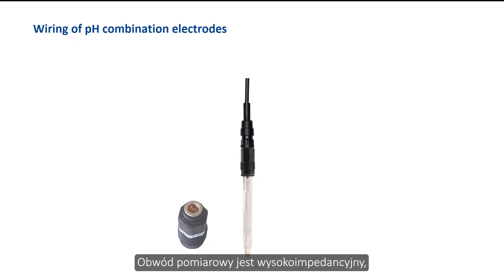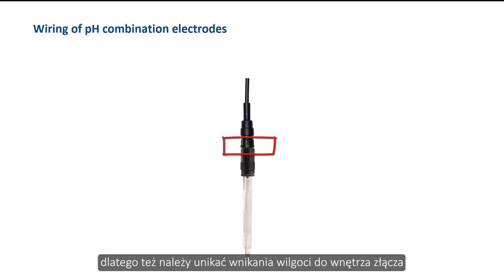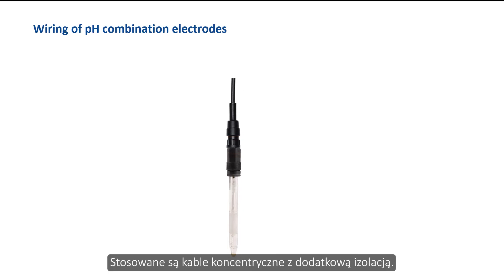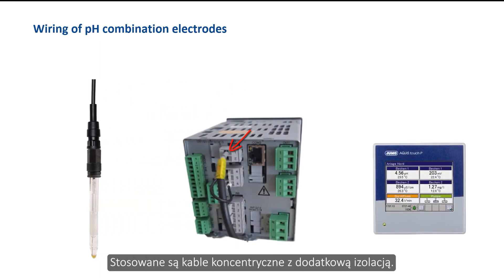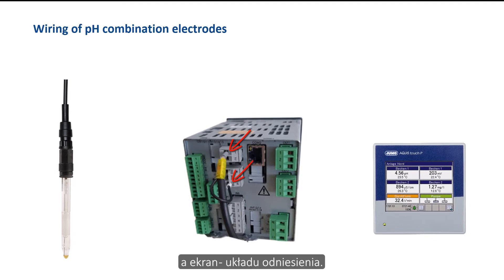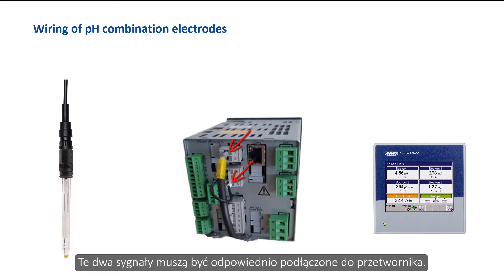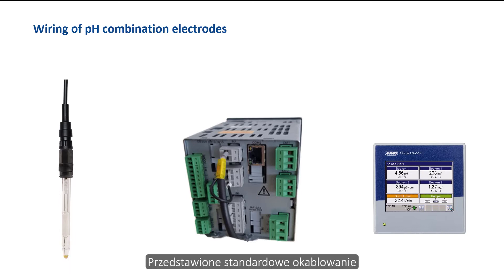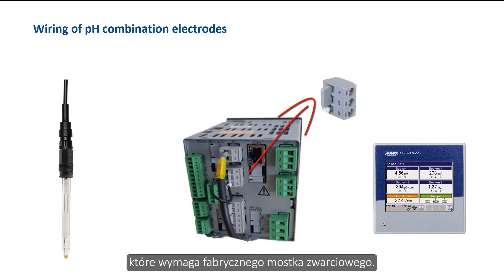The measuring circuit is very high impedance, which is why moisture penetration into the connectors must be avoided, even during installation. Coaxial cables with additional insulation are used. The inner core carries the potential of the measuring system, and the shielding carries that of the reference system. The figure shows the connection of a pH combination electrode to analysis input 1 of the YUMO Aquestouch P multichannel instrument. The standard wiring corresponds to the asymmetrical connection, which requires a factory-fitted short circuit bridge.